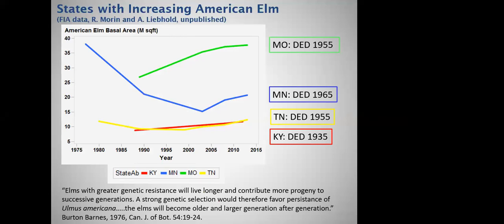Another example where natural selection may be helping us is Dutch elm disease and American elm. This graph shows the basal area of elm over different years using Forest Inventory and Analysis data across a few different states. In Minnesota, the most recently infested state, the typical trajectory is a significant decline in elm basal area over many years — but now we're starting to see an increase. In other states that have had Dutch elm disease for a long time, we're also seeing increases, all starting to increase, though at slightly different trajectories. This may be evidence that natural selection is helping us there.